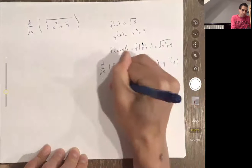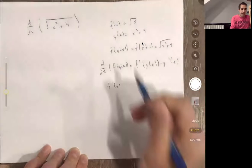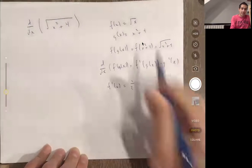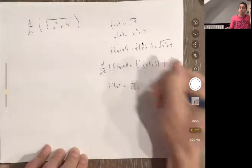Notice that f'(x), I can use the power rule. f(x) is x to the one-half, so this is one-half times x to the negative one-half, which is 1 over 2√x.